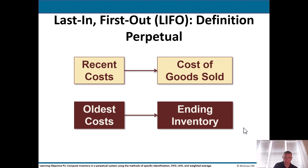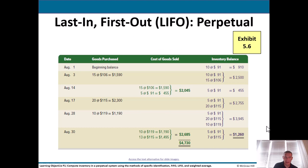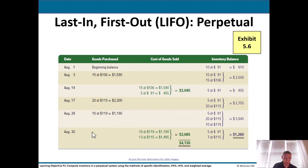LIFO is the exact opposite — recent costs are cost of goods sold, oldest costs go into ending inventory. On August 14th, they take the most recent layer: 15 at $106 first, then five from the $91 layer. On August 30th selling 23 units: take the last-in layer — the August 28th $119 units — first, then 13 of the $115 layer, leaving seven at $115. Ending inventory has five at $91 and seven at $115.